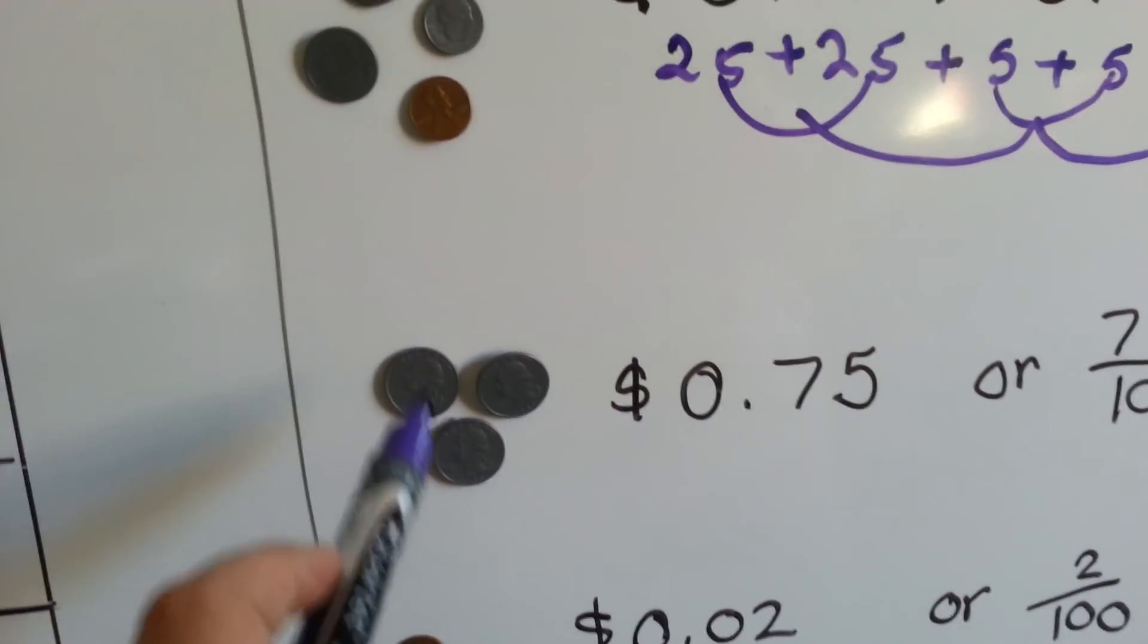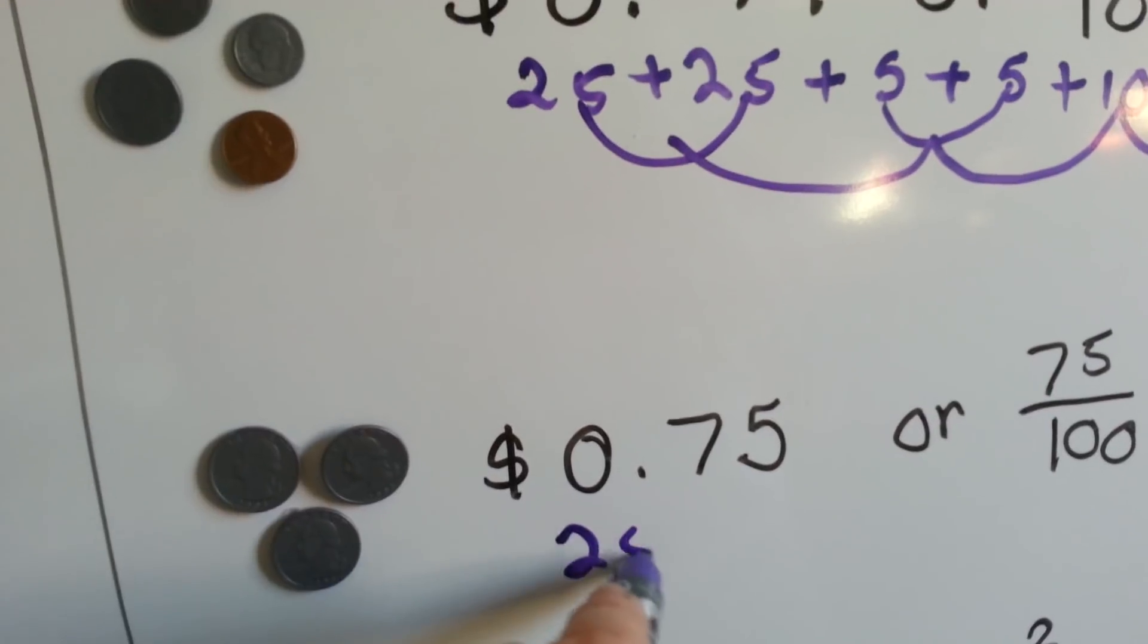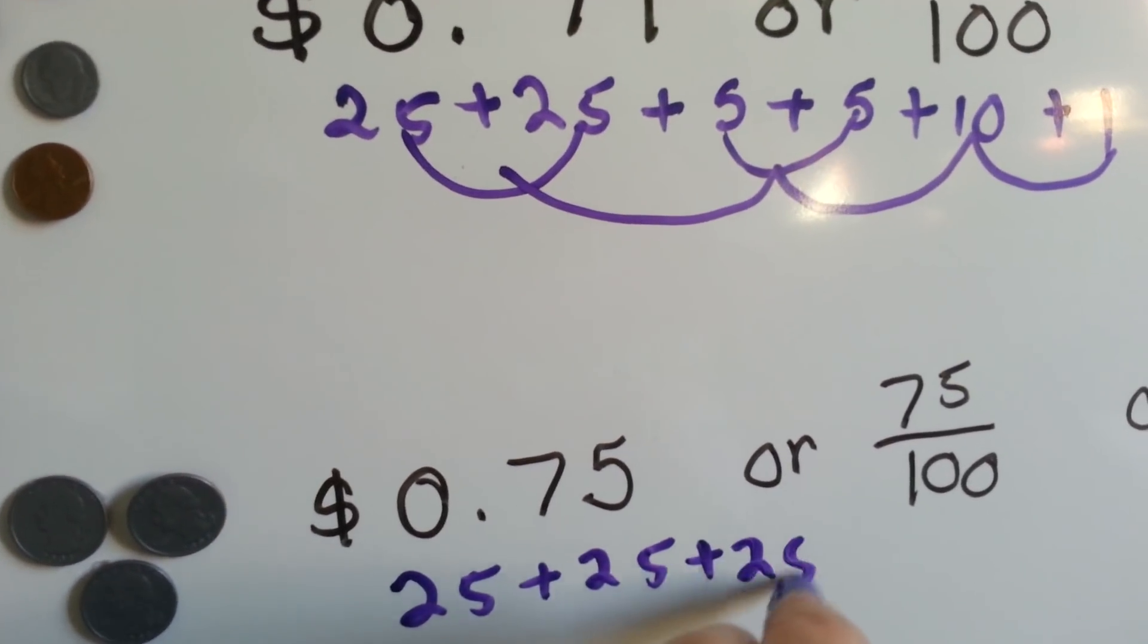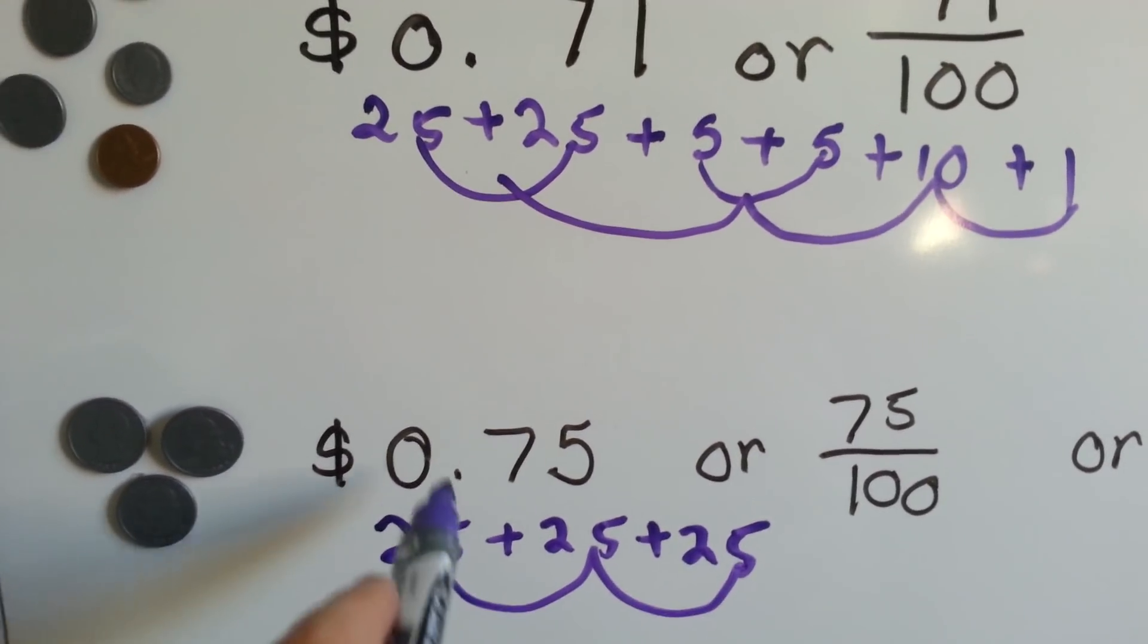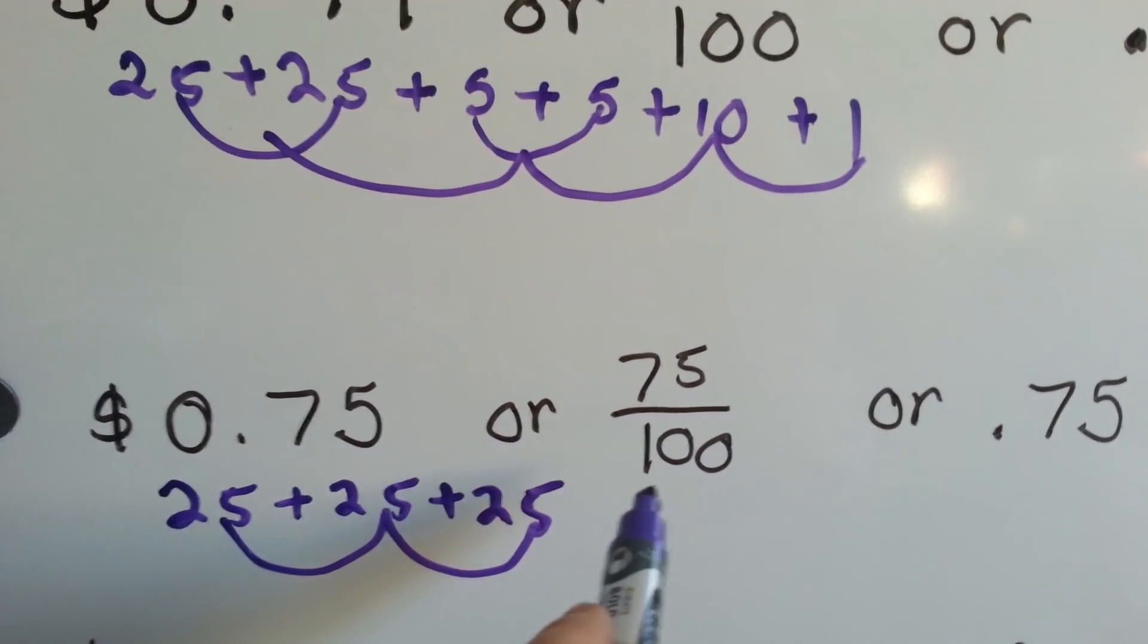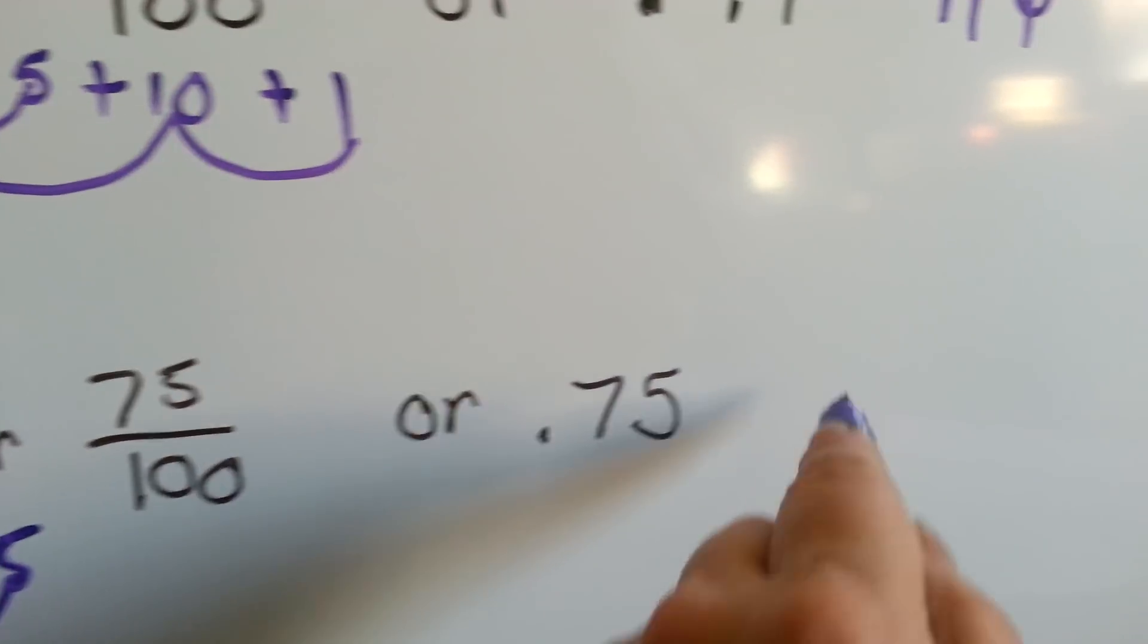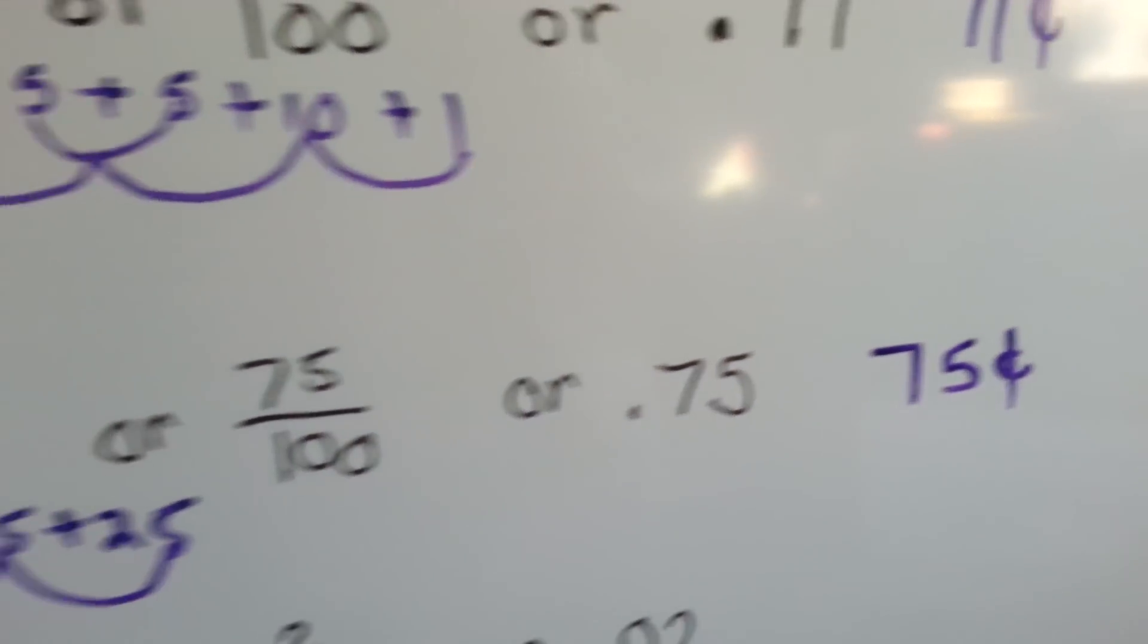Now we've got three quarters. That's 25 plus 25 plus 25. That's 50 and another one is 75. So that's 75 cents written with the dollar sign as zero, the decimal point, and the 75 or 75 one-hundredths. Or it could be written as 75 one-hundredths like a decimal like that. Or you could say it's 75 cents written like that.